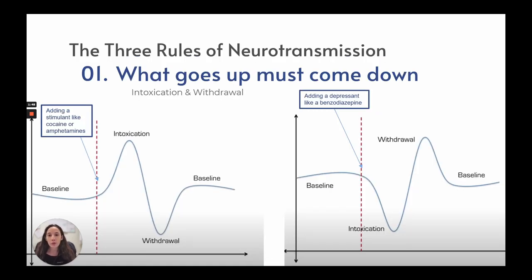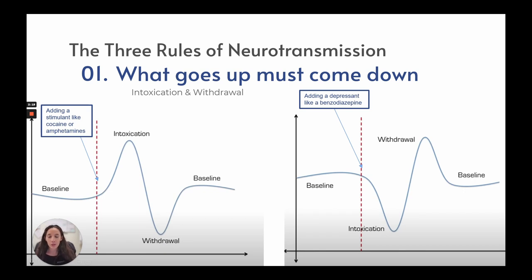There are three rules of neurotransmission. The first is what goes up must come down, and the inverse is what goes down must come up. If we add a stimulant like cocaine or amphetamines, the patient goes from their baseline into intoxication that is high. However, when they go into withdrawal, we need to watch for them coming down — they'll be sedated, lethargic, and then come back up to baseline.